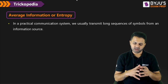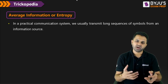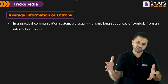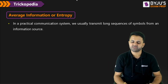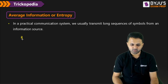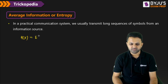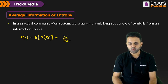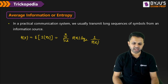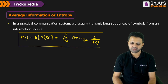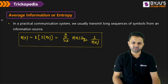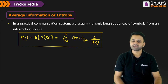First of all, when we calculate entropy, that is nothing but another name for average information. When there are long sequences coming from the source, we always look for the average information. The average information or entropy of any source is given by the summation i=1 to n of P(xi) * log base 2 of (1 / P(xi)). This is the information carried by the source on average — that is why it is called the expected value of information, which is the average value.